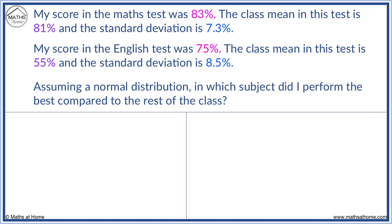We calculate the z-score for maths. x is the individual result, which is 83%, mu is the mean of 81%, sigma is the standard deviation of 7.3%. These values are substituted into the z-score formula.